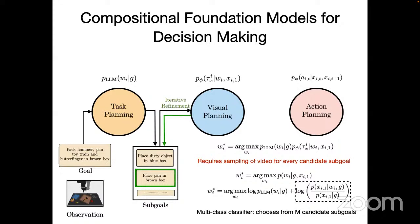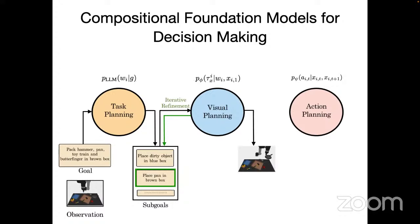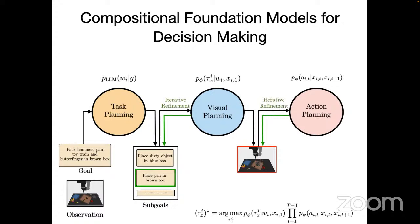Once sub-goals are selected by the classifier, visual planning generates a video. However, the video can sometimes be jaggy — for example, when trying to pick up a pan it can be shaky. This is where iterative inference from action planning comes in: it biases the denoising process of video diffusion using logits from the action model, choosing a video trajectory that maximizes the joint probability. This usually produces much smoother videos, especially during pick actions where wrong predictions lead to the robot failing to grasp the right object.